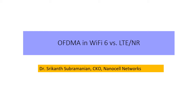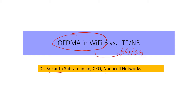Hi, continuing on the OFDMA and Wi-Fi 6 thread, I thought of looking at the OFDMA radio resource organization in Wi-Fi 6 vis-a-vis 4G and 5G. My name is Srikant, and I'm with NanoCell Networks. Please also note there are many other aspects which I have covered in other videos, the details of which I have put in the notes section.